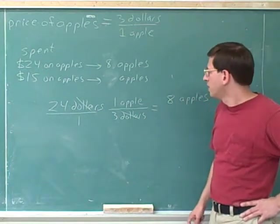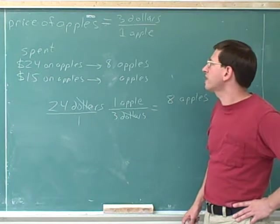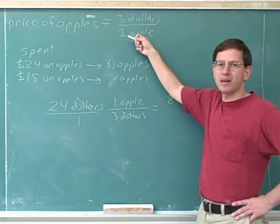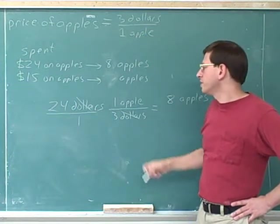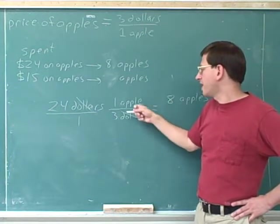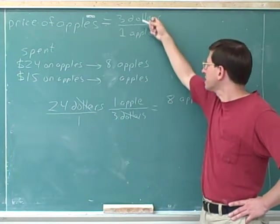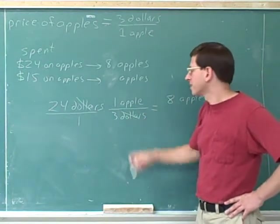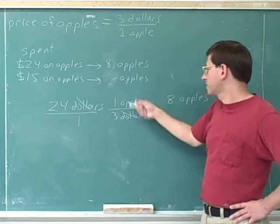This problem might be a little trickier for people because notice that when we talk about the price of apples, we report it with dollars on the top and apples on the bottom. But when we did this problem, we put the dollars on the bottom and the apples on the top. Can you see how we flipped these ratios? Here the dollars were on the top, but here the dollars were on the bottom.